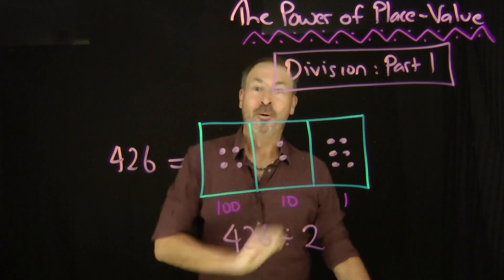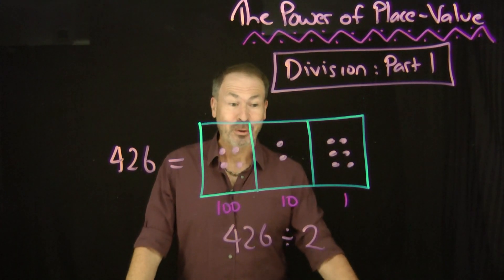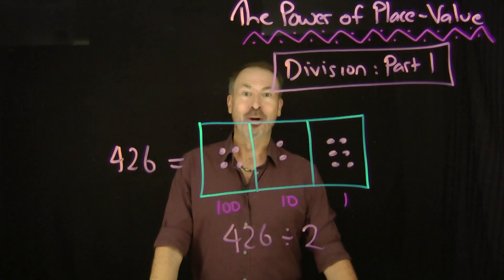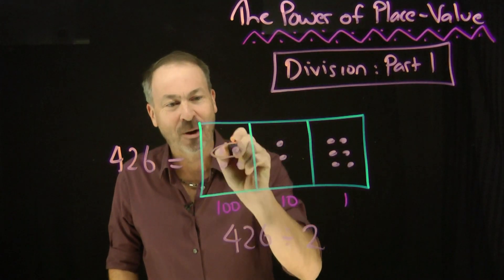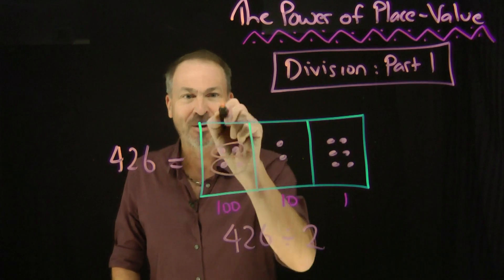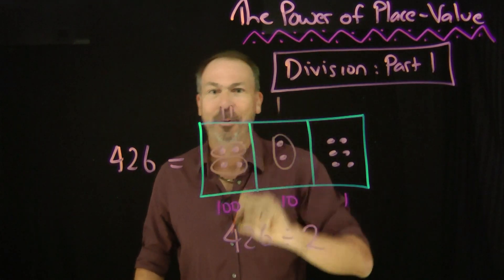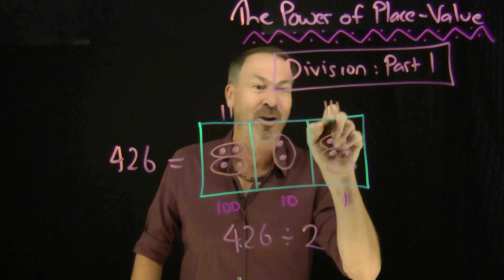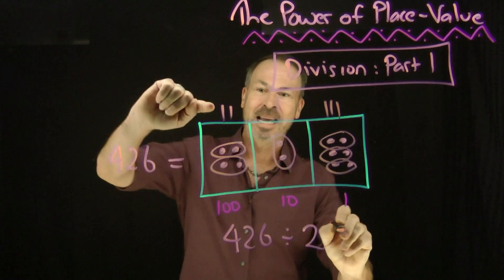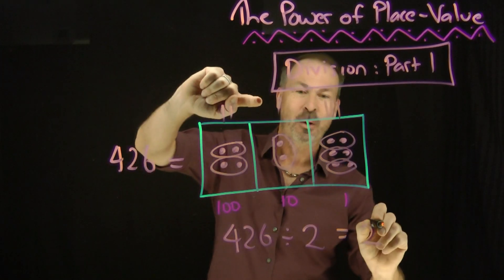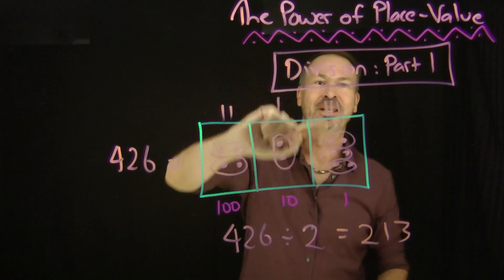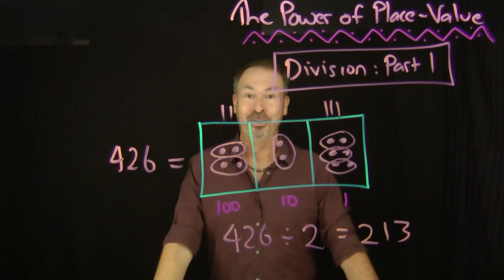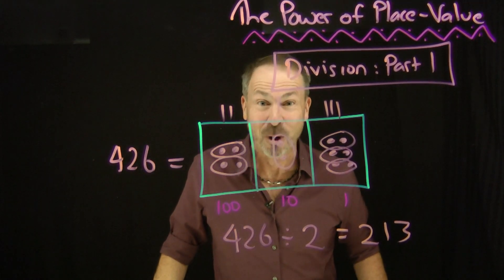Let's do another example. What's 426 divided by two? What got doubled to give this picture? Look at this and see: a dot here got doubled, a dot here got doubled, clearly a dot there got doubled as well, a dot over here got doubled, another one over here got doubled, and in fact a third dot over here got doubled. I see two dots in the hundreds place, one dot in the tens place, three dots in the ones place got doubled to give the answer 426. 426 divided by two is 213.